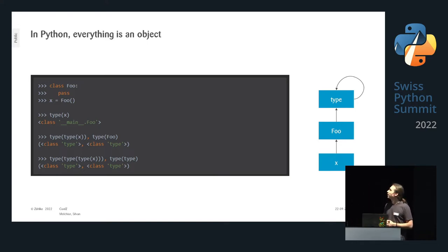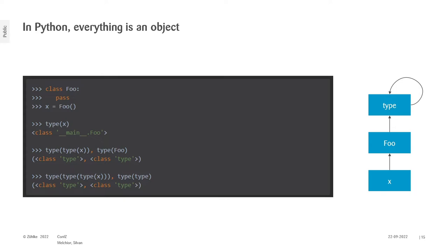In Python everything is an object. If we define class Foo and create instance x, the type of x is Foo — no surprise. Then: what is the type of Foo? It's 'type'. And what is the type of 'type'? It's again 'type'. So x is of type Foo, Foo is of type 'type', and 'type' is of type itself — we end up with an infinite loop. That's normal. Metaclasses let you define your own 'type'.